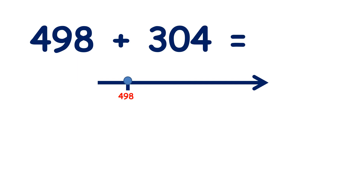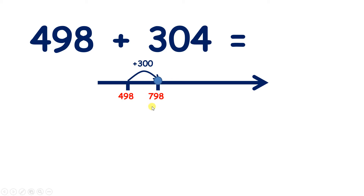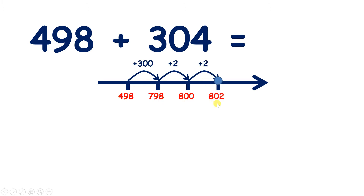Now pause the video and see if you can add 304 to 498. If we add three hundreds to 498, that takes us to 798, because 4 plus 3 is 7. So now we need to add four units. Two more will take us to 800.